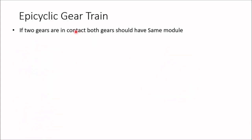To analyze an epicyclic gear train, we need to know some key points. First, if two gears are in contact, both gears must have the same module. If there are two gears A and B, their module must be equal. Since module equals diameter divided by number of teeth, we have D_A / T_A = D_B / T_B. This relation must be satisfied for any two gears A and B that are in mesh.